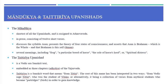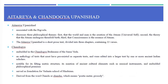The Aithriya Upanishad is a Mukhya Upanishad associated with the Rig Veda. It discusses three philosophical themes: first, that the world and man is the creation of Atman; second, the theory that Atman undergoes threefold birth; and third, that consciousness is the essence of Atman. It is a short prose text divided into three chapters containing about 33 verses.